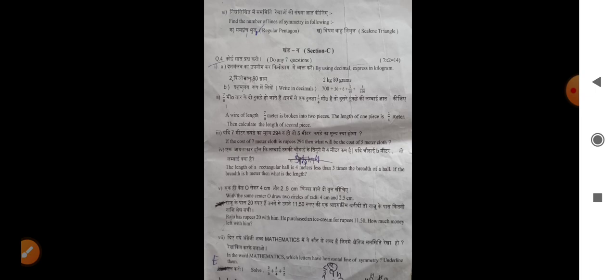Find the number of lines of symmetry in the following: Regular pentagon and scalene. Question 4. We have to do 7 questions.